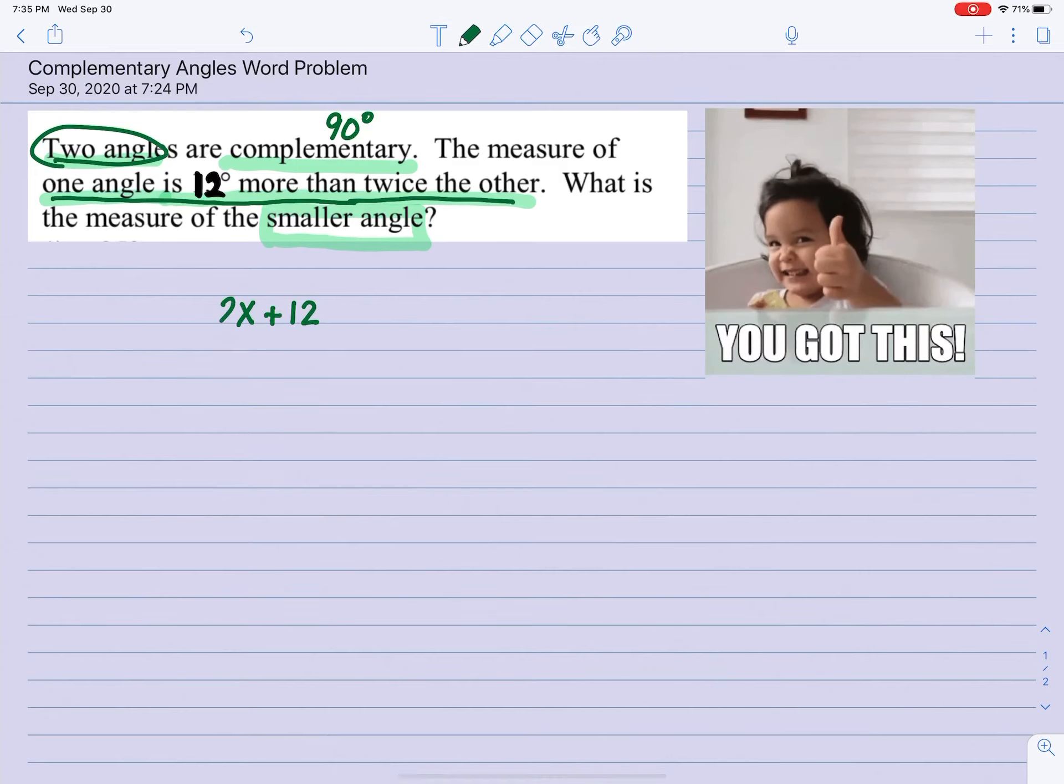So twice means two times. If we said the other, that means the other angle. So I'm going to call this the other angle, that's x. And the one that we just wrote was 2x plus 12.